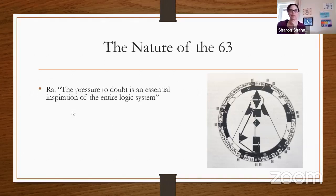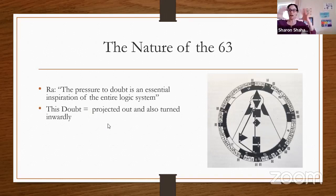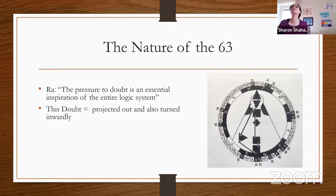Ra says about the nature of the 63: the pressure to doubt is an essential inspiration of the entire logical system. This doubt is projected outward at things in your reality. But this is where it becomes a really massive writer's block — or creative block for many people — when you start projecting and turning that doubt inwardly.